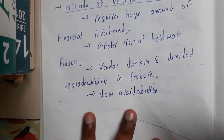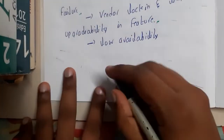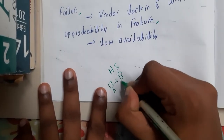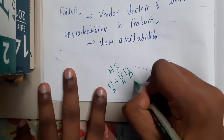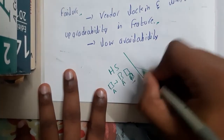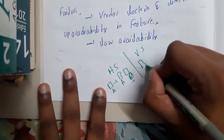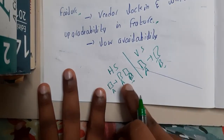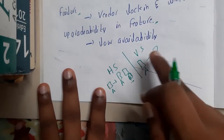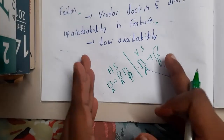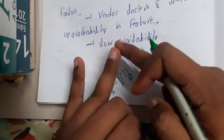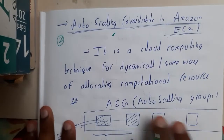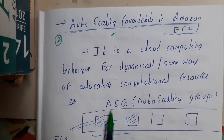To recap: in horizontal scaling you keep your old system and add to it. In vertical scaling you buy a new system based on your requirement, replacing the old one entirely. In the next lecture we'll discuss auto scaling. Thank you for watching.